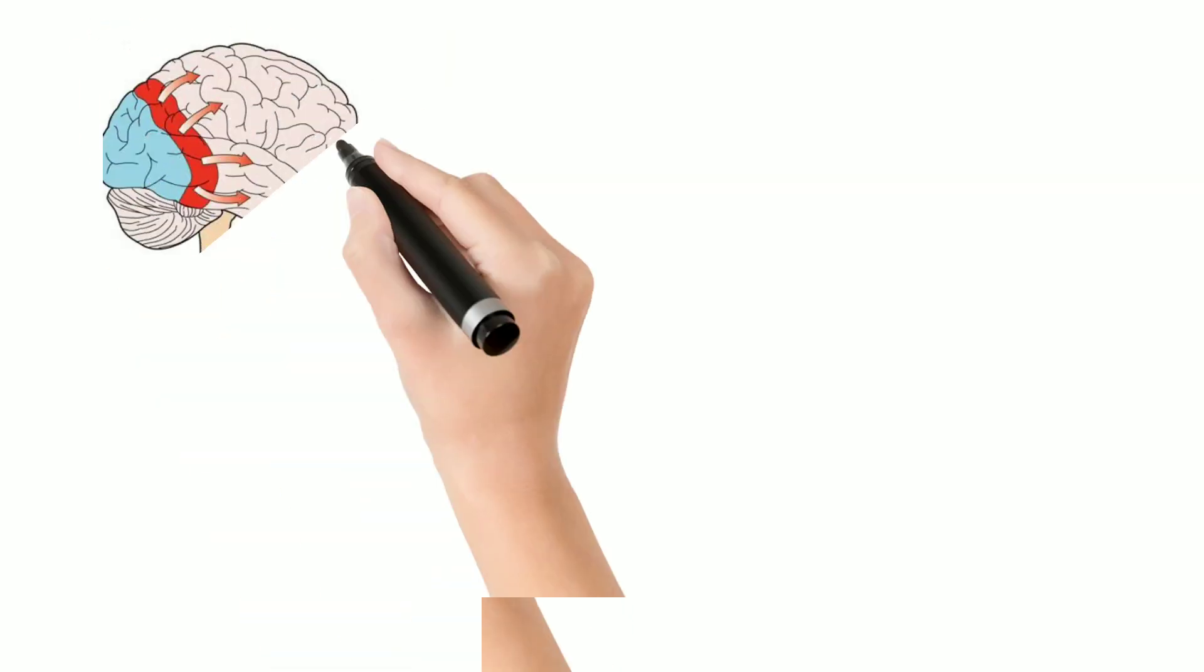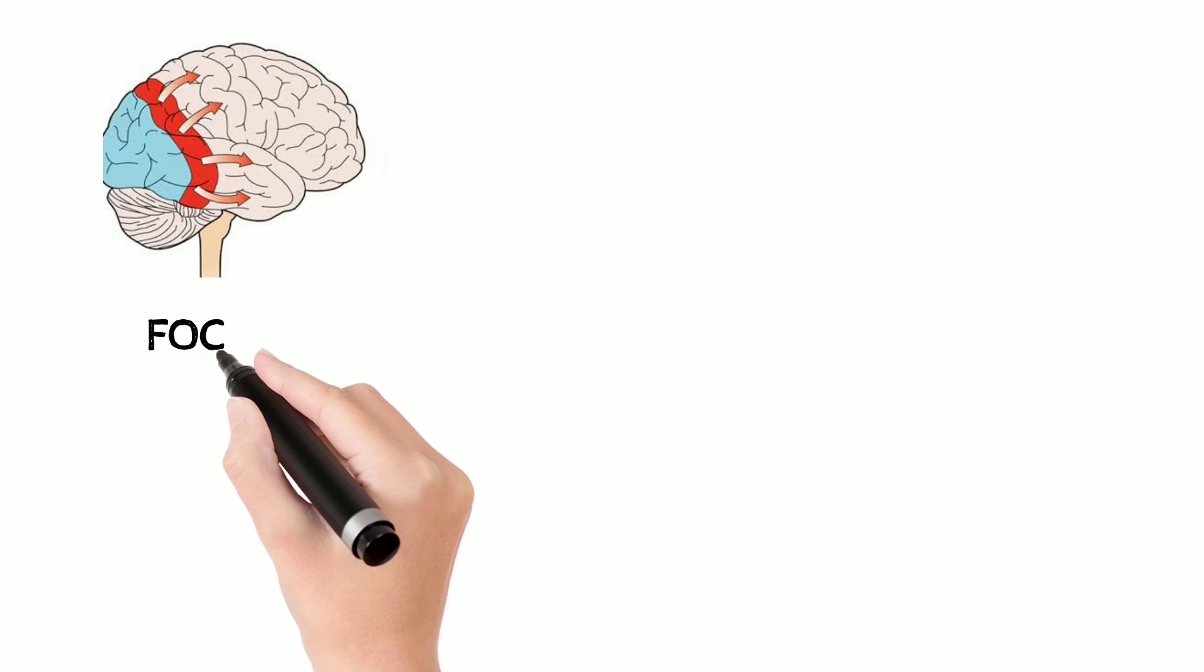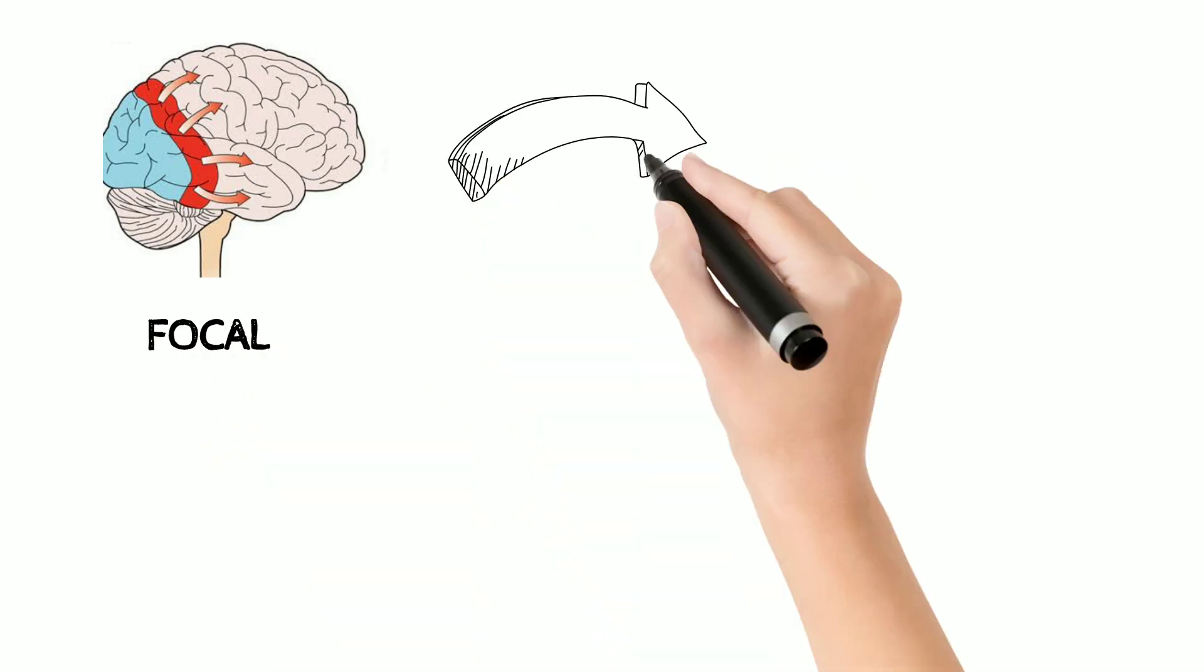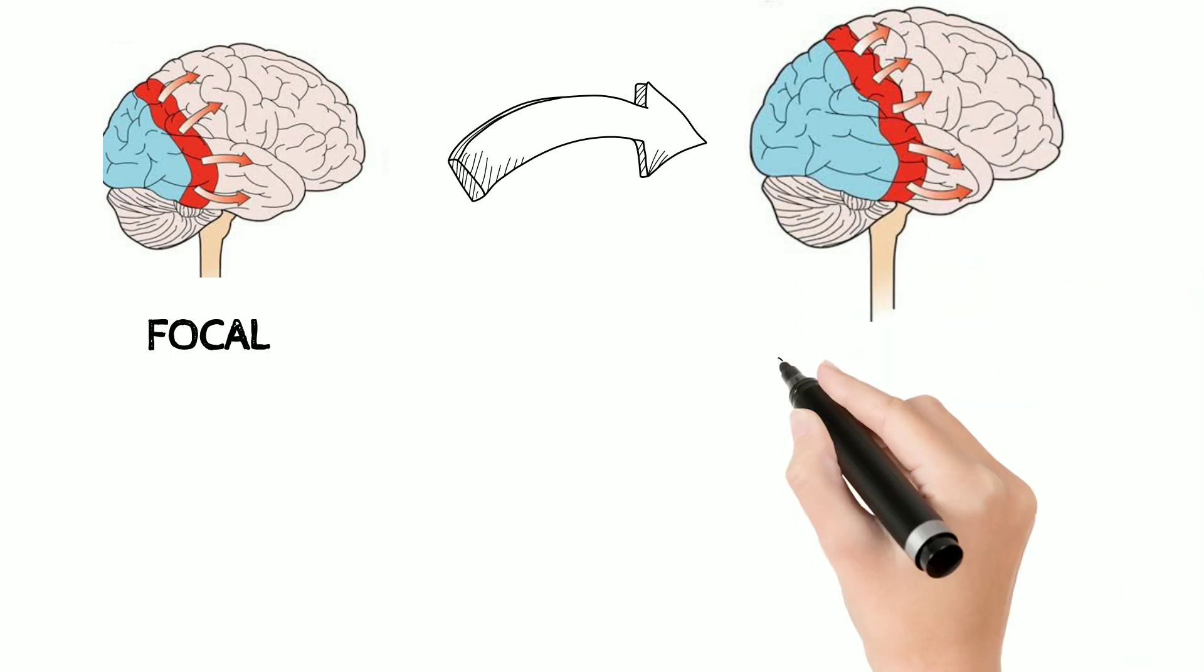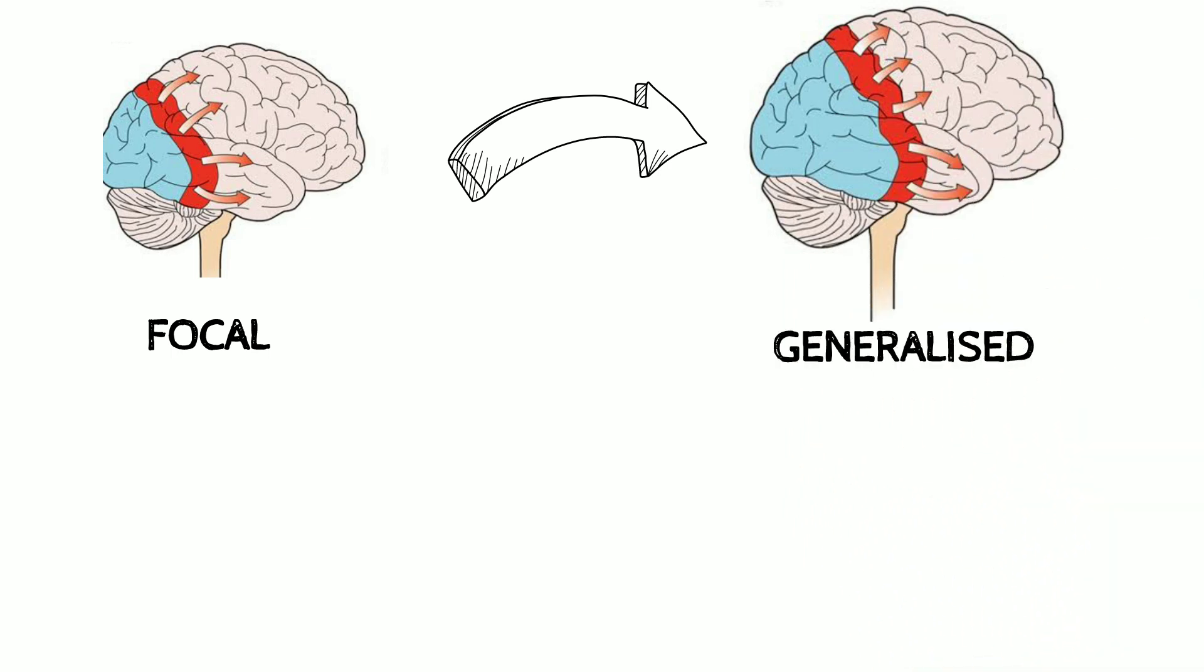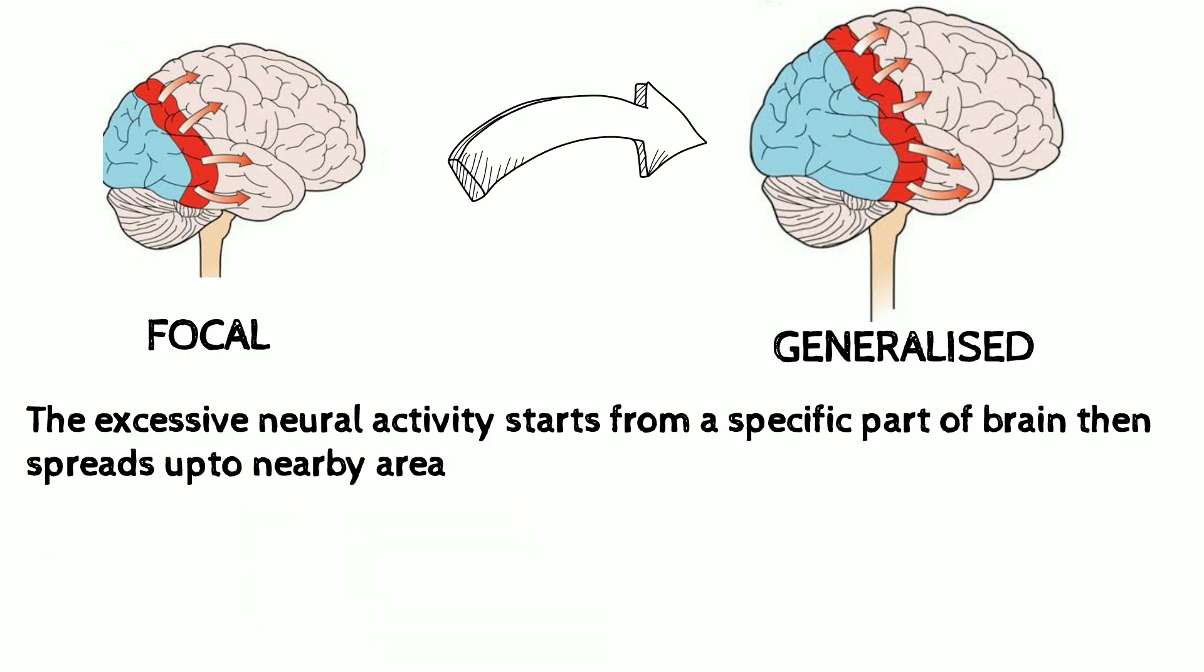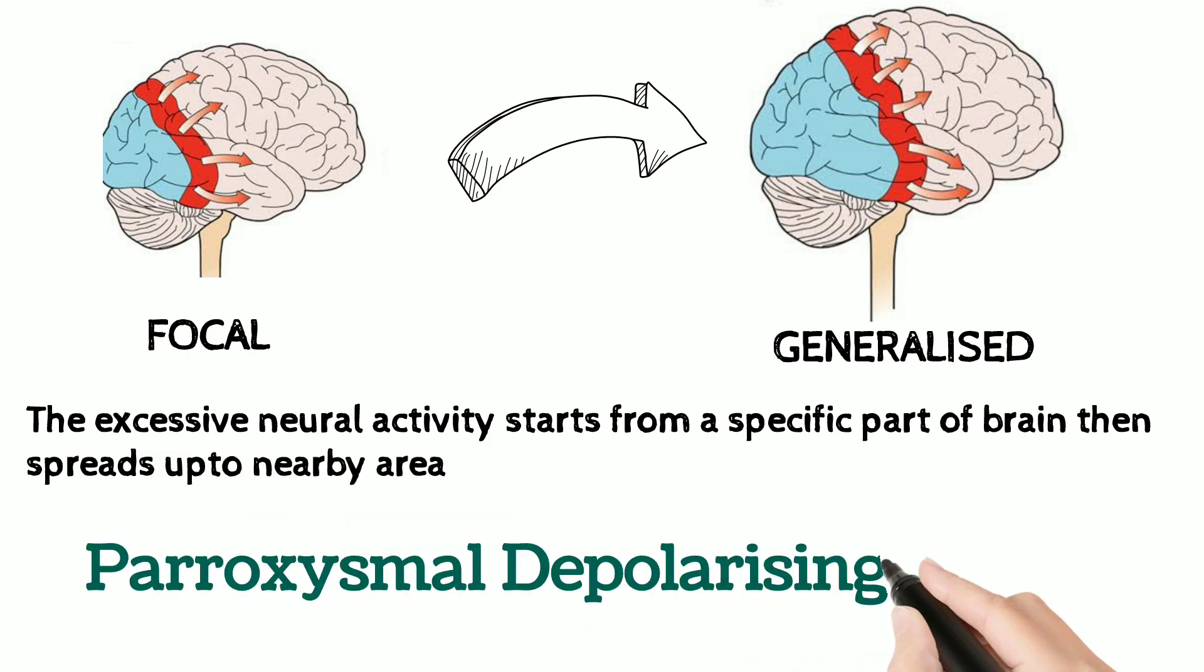Sometimes the condition begins in a specific part of the brain or a focus, but then it progresses to a large part of the brain involving the nearby area as well. This phenomenon of a focal seizure turning into a generalized condition is called paroxysmal depolarizing shift.